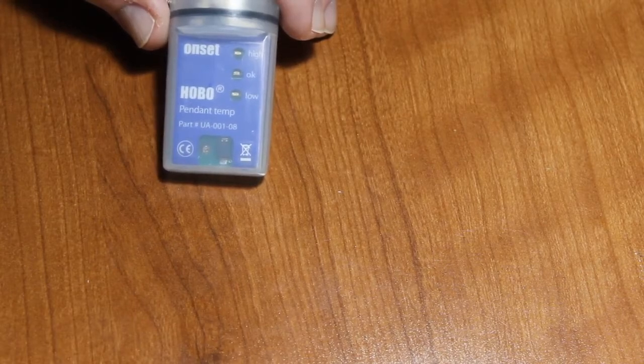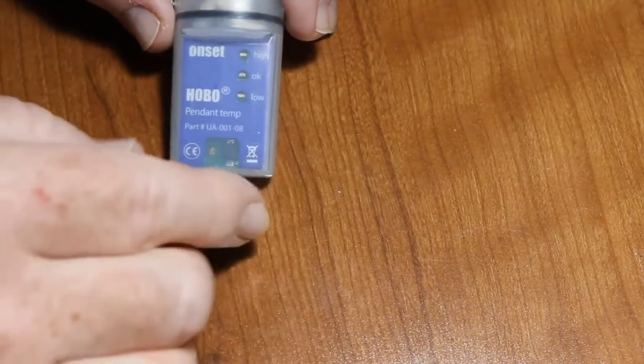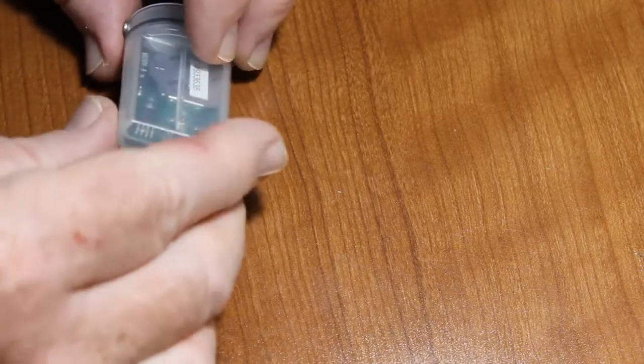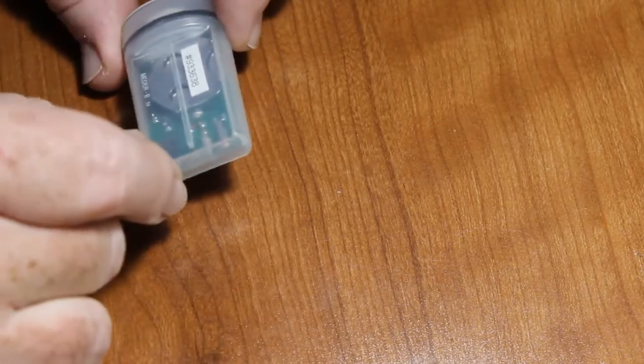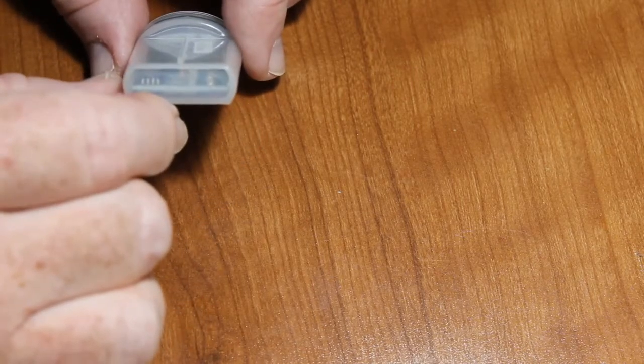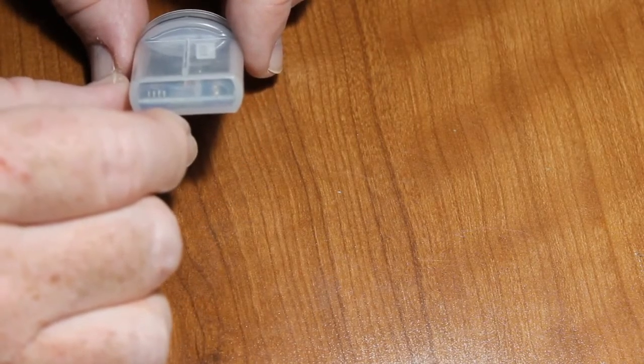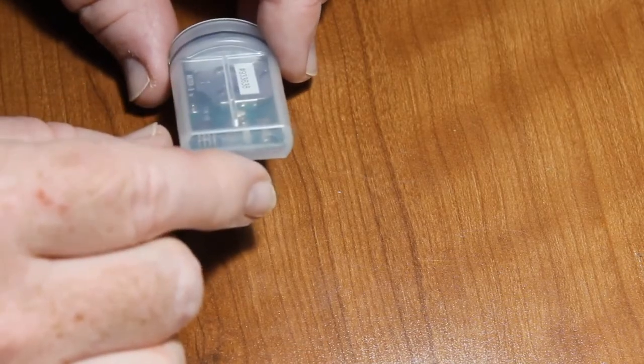The other thing to keep in mind before we take it apart is have a look at the orientation of the spline down the back of the logger. Here, there is a ridge that acts as a keyway that allows you to put the logger in the correct orientation in the base station or in the shuttle.